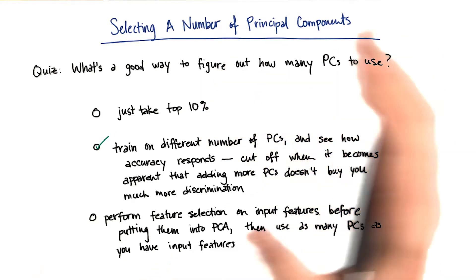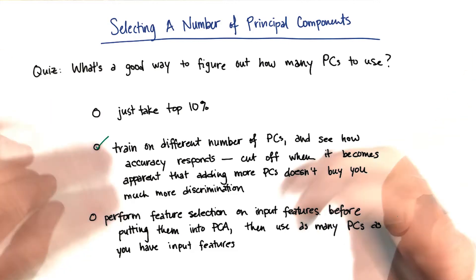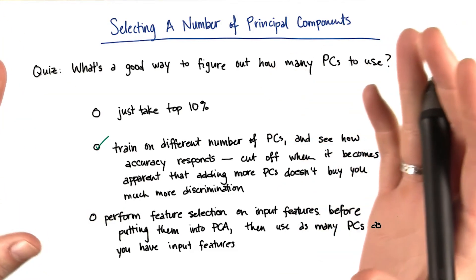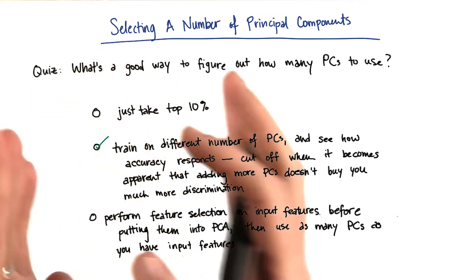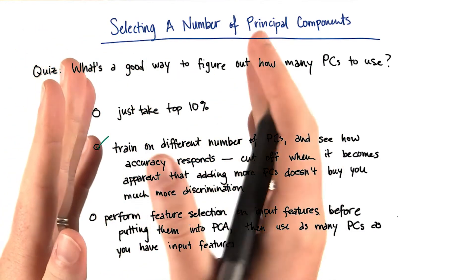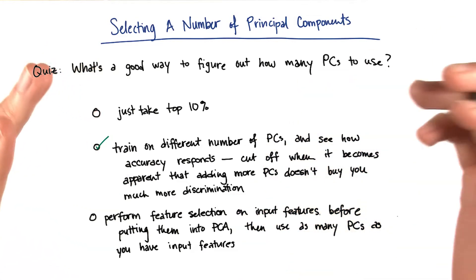that what you want to do is be open to different numbers of principal components being relevant to you. And the way that you figure out what that trend is, is just by trying different numbers. You say, just give me the first principal component, the first plus the second, the first plus the second plus the third, and you watch how the accuracy responds to these increasing numbers of principal components.